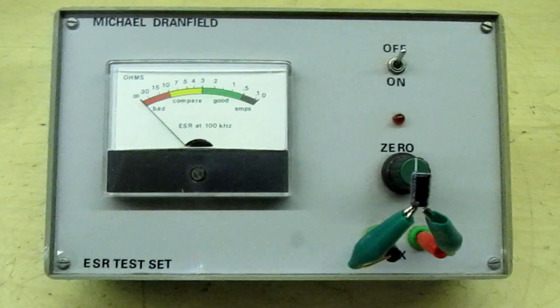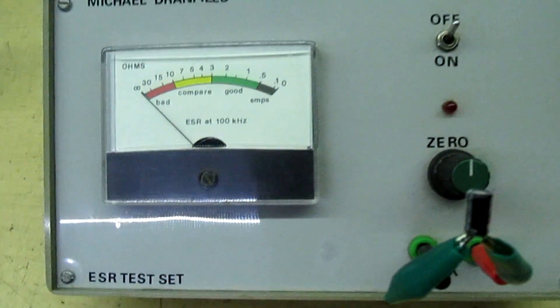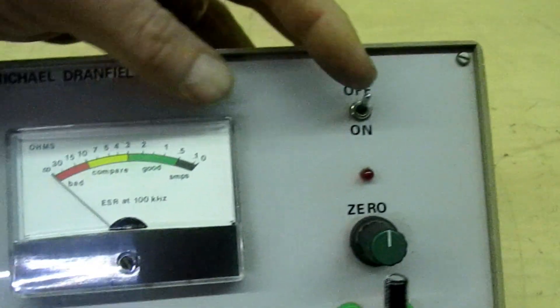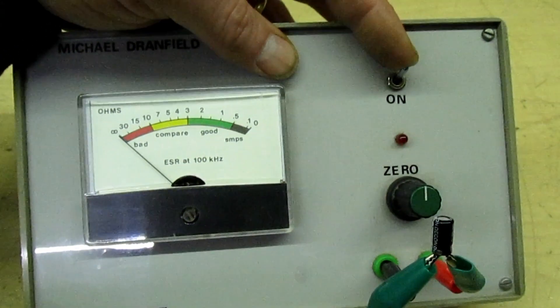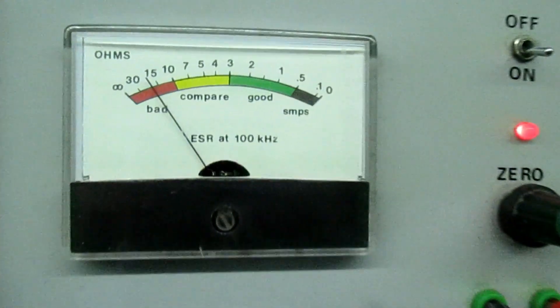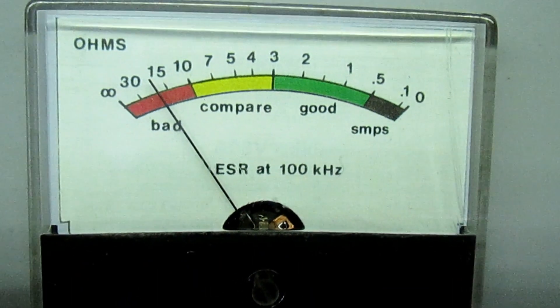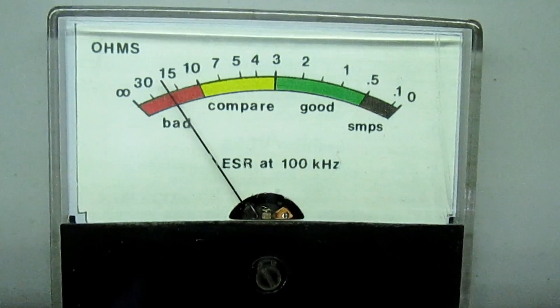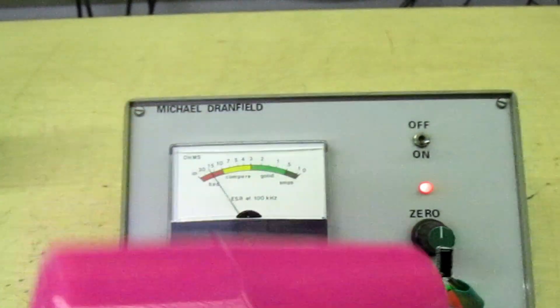I've swapped the capacitor now for one that's worn out, it's 100 microfarad, 25 volts. I'll turn the tester on and give it a couple of seconds for the reading to stabilize. If you look at that, it's showing an ESR of about 17 to 18 ohms, completely worn out, no good. But watch what happens when I heat the capacitor with the hairdryer.